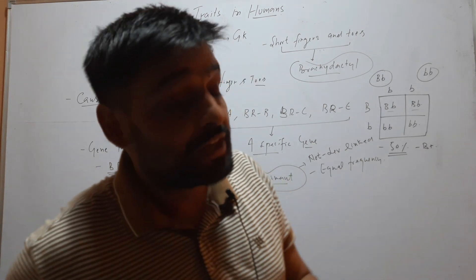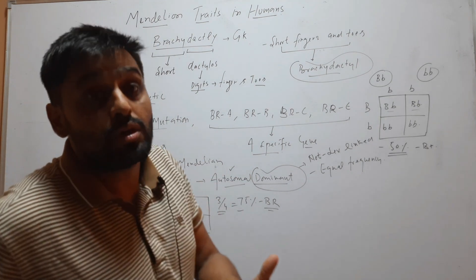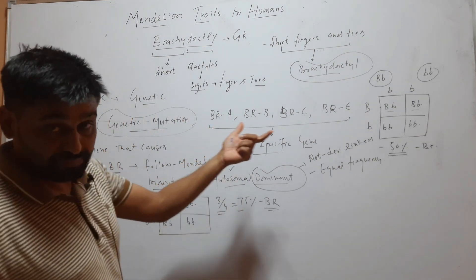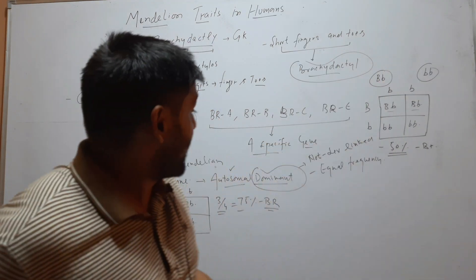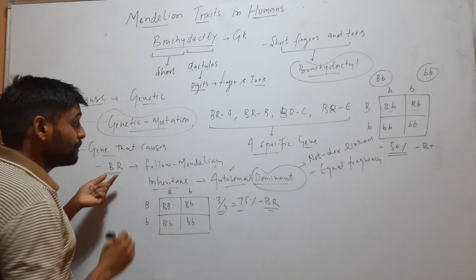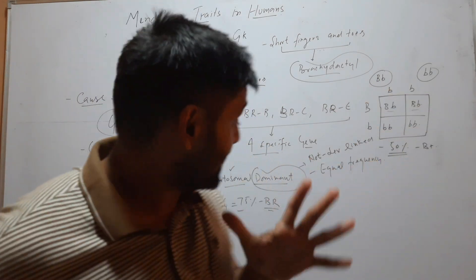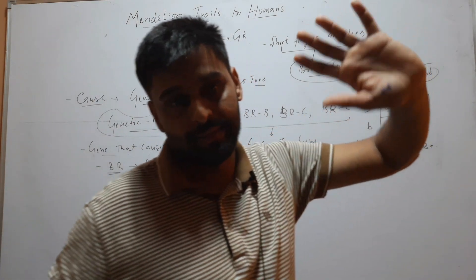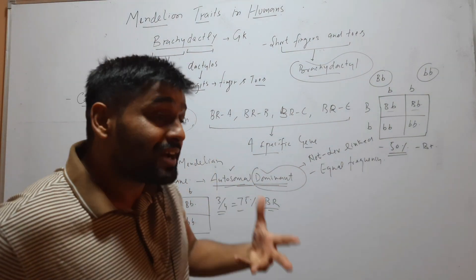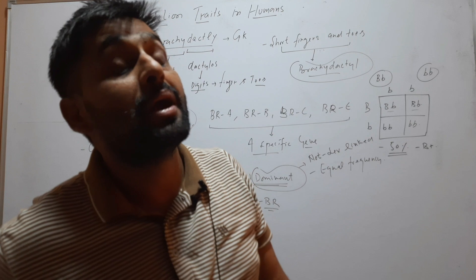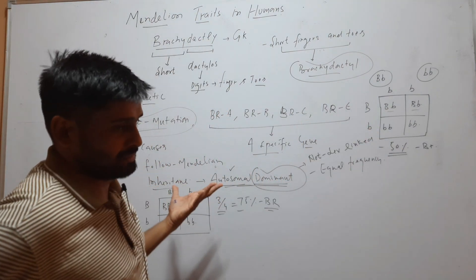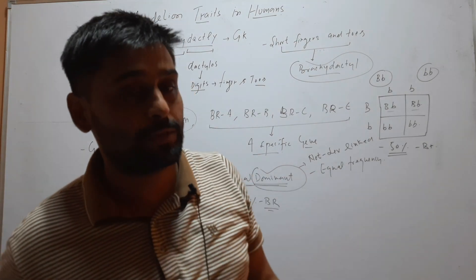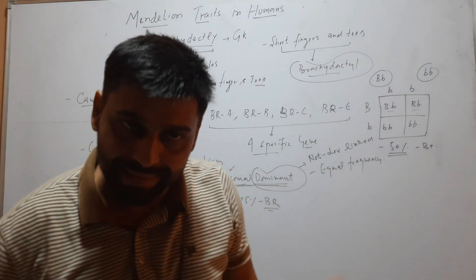So Brachydactyly is a condition in which the fingers and toes of humans are short, caused by genetic mutation. It is of different types and each is caused by a specific gene. Brachydactyly follows Mendelian autosomal dominant inheritance. If one parent is affected, 50% of children will be affected. If both parents are heterozygous, 75% of children will be affected. That is it for Brachydactyly.